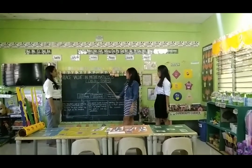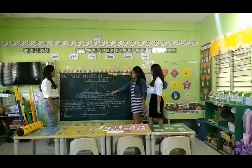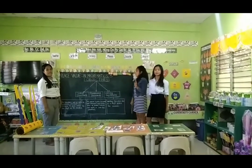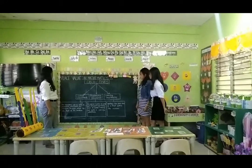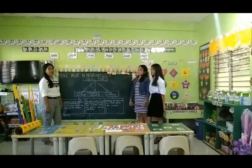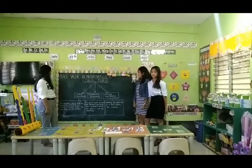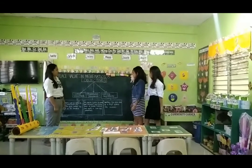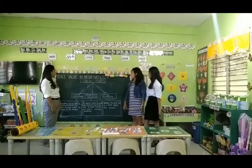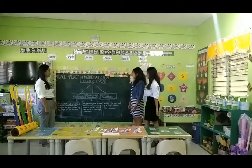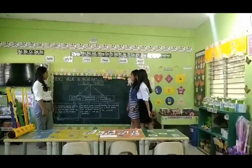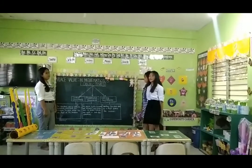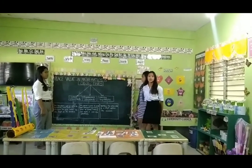Objectives. Under the objectives are content standards, performance standards, and learning competencies. Content standards: the learners will be able to demonstrate, understand, and recognize the place value of a digit based on its location. Performance standards: the learner is able to create and interpret representations of data, tables, and apply in real-life situations. Learning competencies: identify the place value of a digit within the numbers.